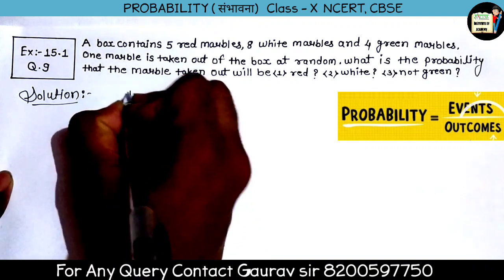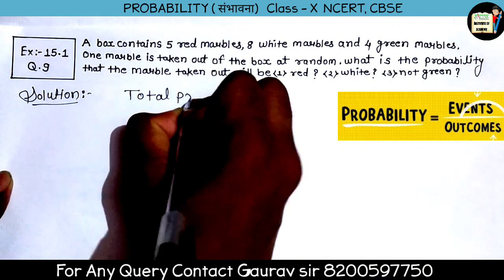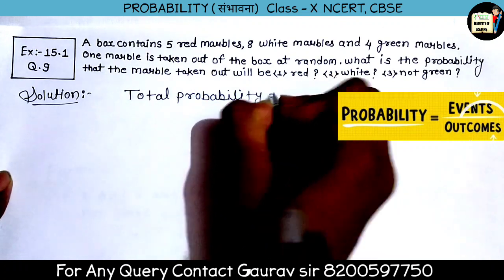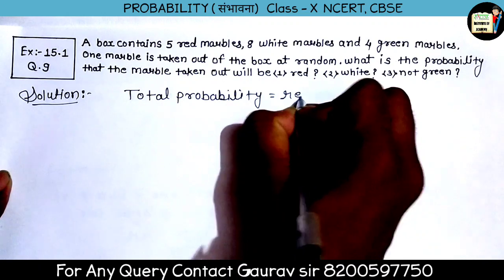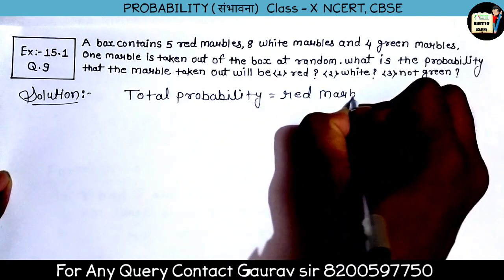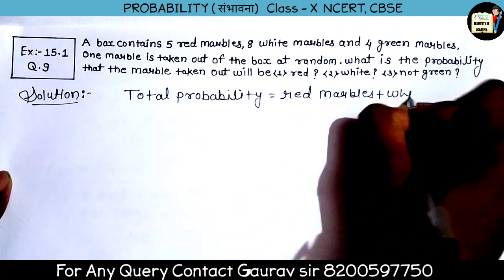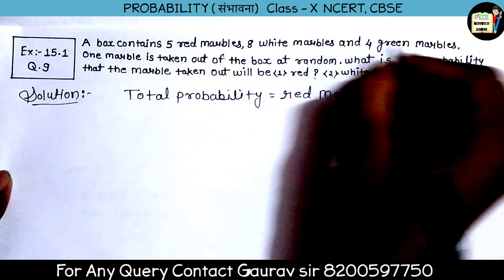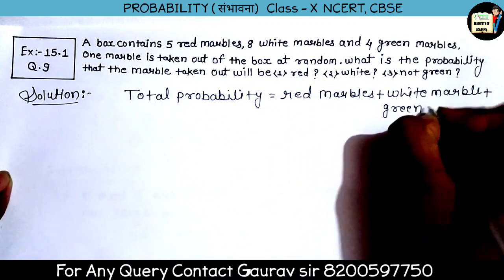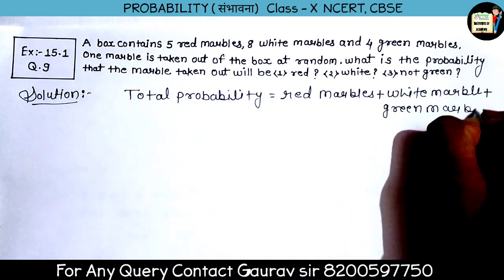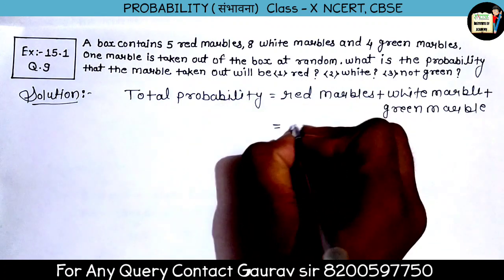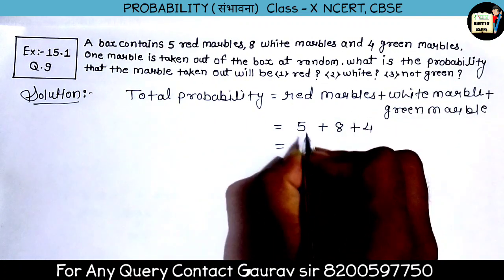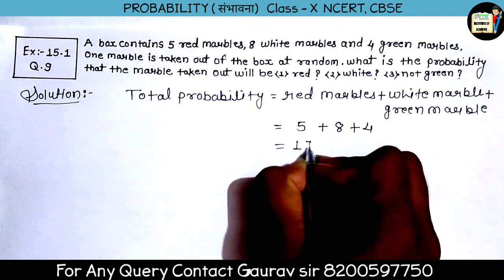First, we write the total probability. Total marbles: red marvels plus white marvels plus green marvels. So red marbles are 5, white marbles are 8, and green marbles are 4. Total: 5 plus 8 is 13, and 13 plus 4 gives total marbles = 17.